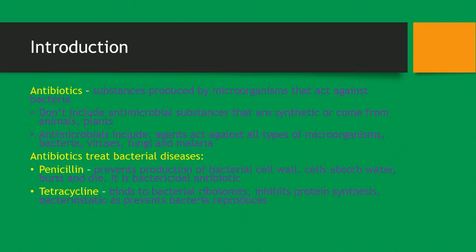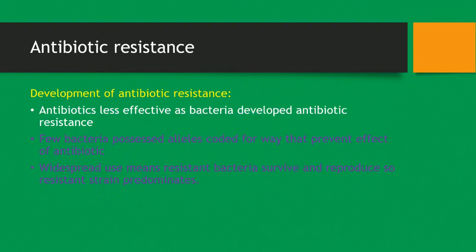Antibiotics that treat bacterial diseases include penicillin, which prevents the production of a bacterial cell wall and therefore cells absorb water, burst and die. It is a bactericidal antibiotic. You also have tetracycline, which binds to the bacterial ribosomes and inhibits protein synthesis. Tetracycline is bacteriostatic as it prevents bacteria from reproducing.